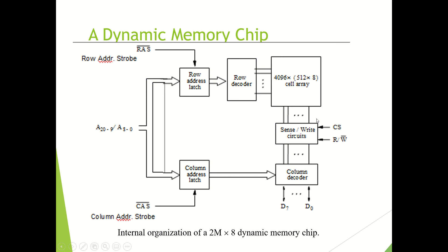The advantage is that now the row is already selected. Since we are taking each group from the first row, next we just want to give the column address alone — no need to specify the row again and again. We just give different column addresses to access all the elements from the selected row. That is called Fast Page Mode.